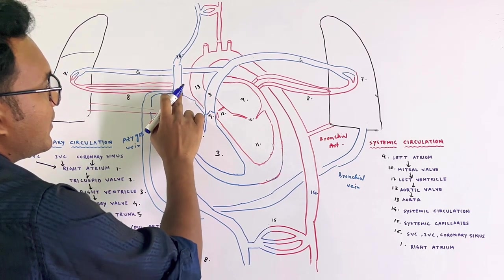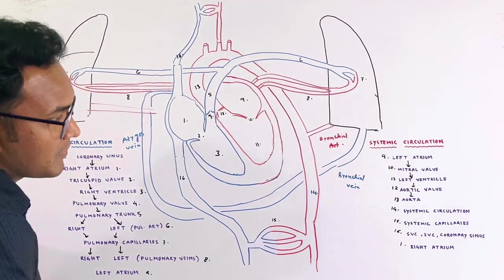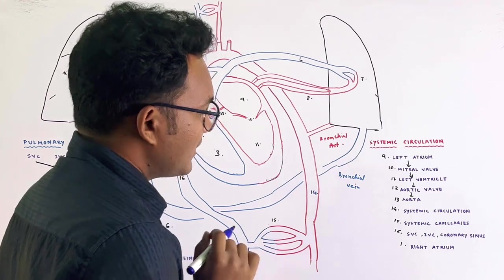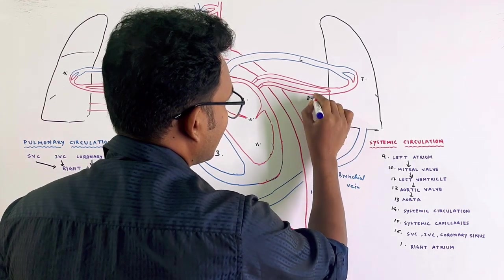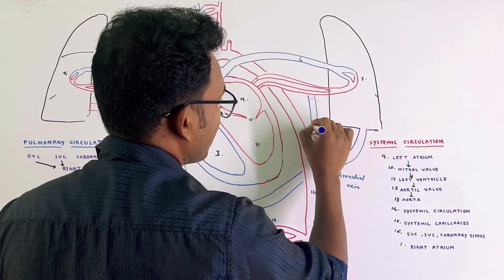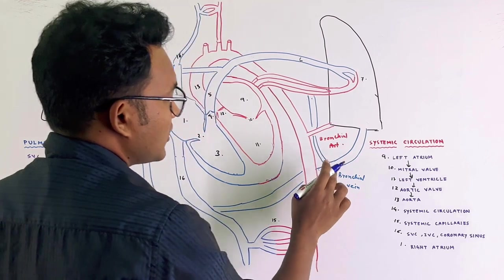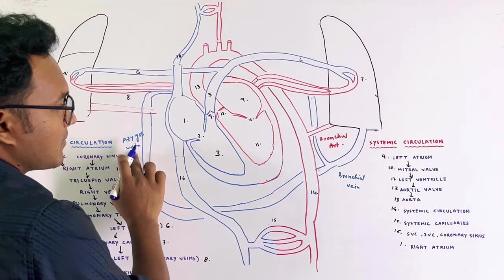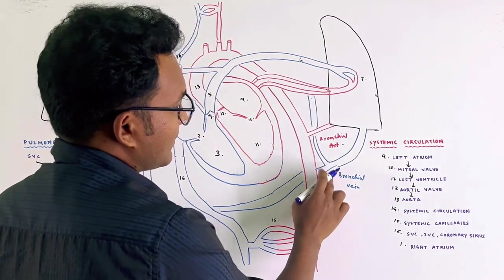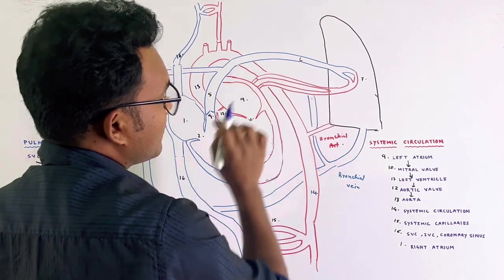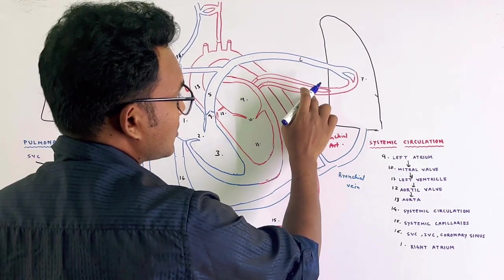The deoxygenated blood from the bronchial veins enters the superior vena cava. However, a minority of bronchial venous blood drains into the pulmonary veins. This small amount of bronchial venous drainage into the pulmonary veins mixes with oxygenated blood going to the left atrium.